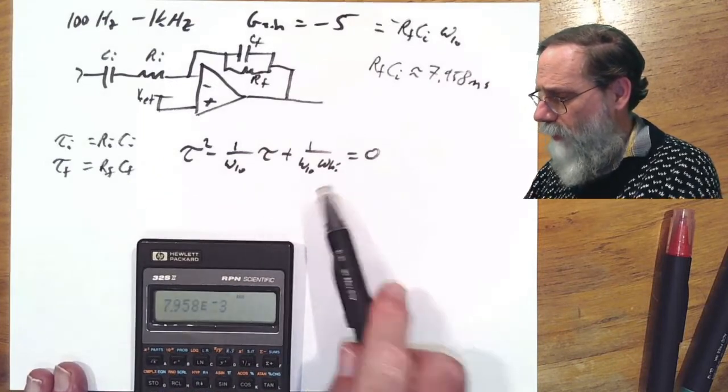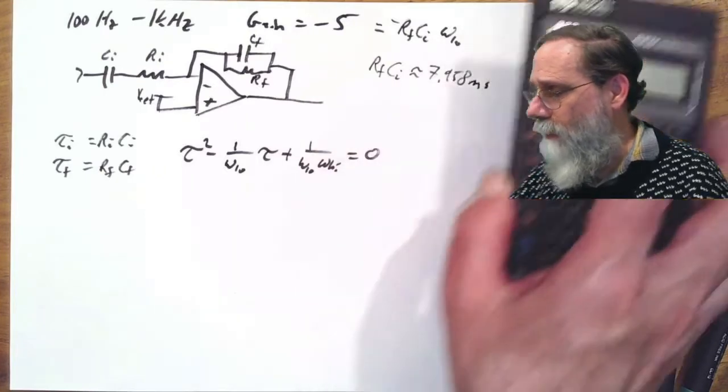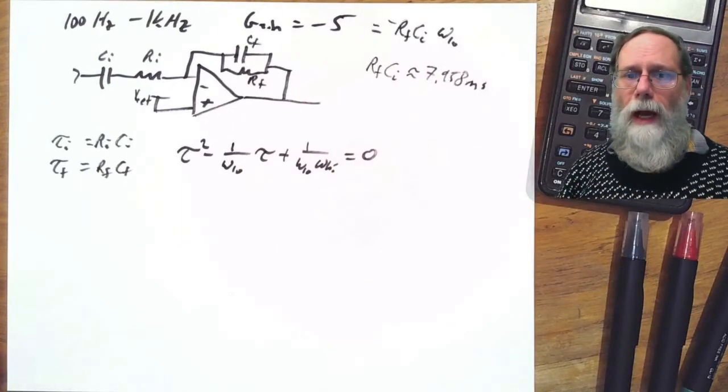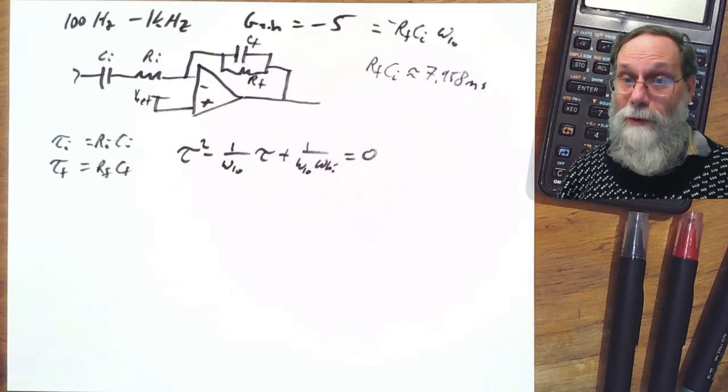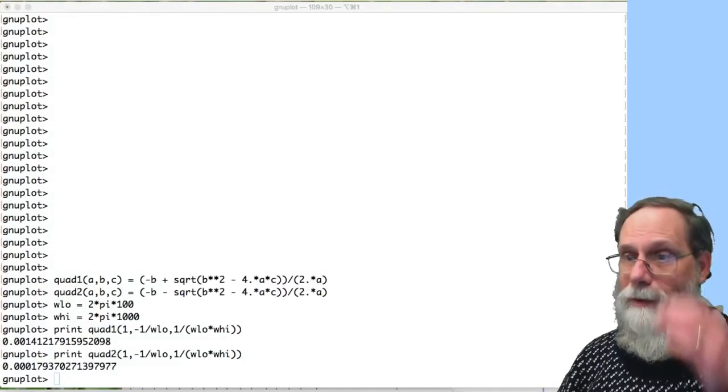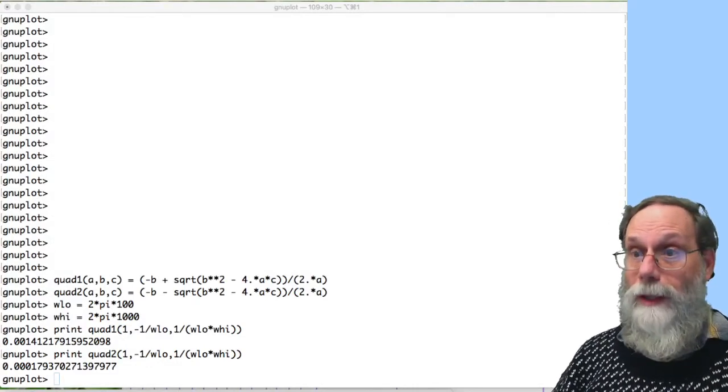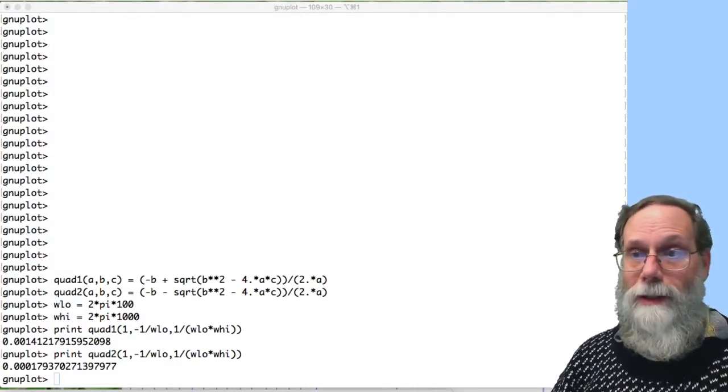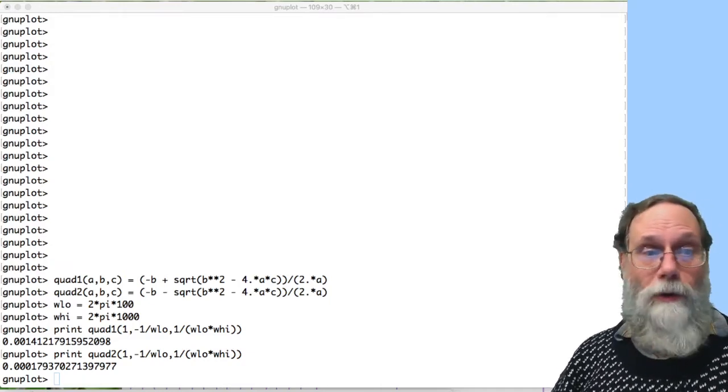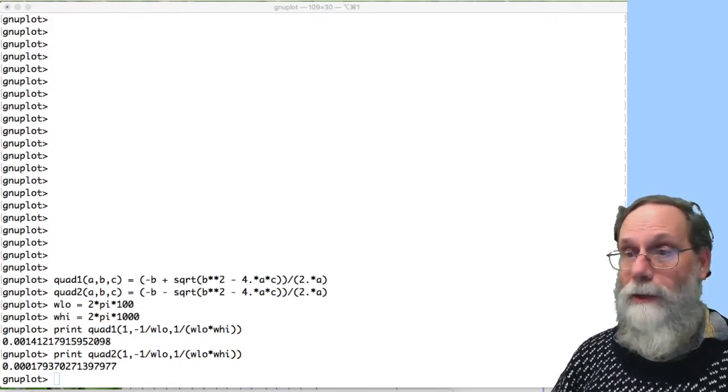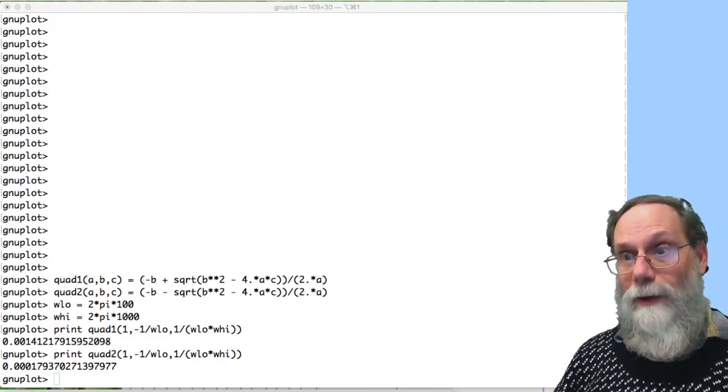What about the roots of this equation? I could do the quadratic equation on my calculator, but too much trouble. I'm going to do that a different way, using GNUplot. Here's what I did to use GNUplot. First of all, I just typed in what is the quadratic formula. Minus b plus or minus. I can't do plus or minus, so I'll just do it twice. Once with plus, once with minus. Square root of b squared minus 4ac, all divided by 2a.